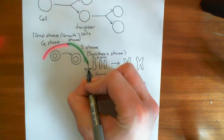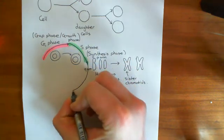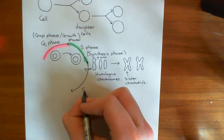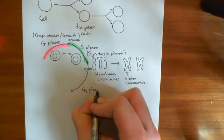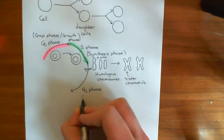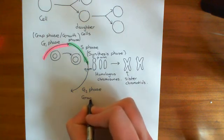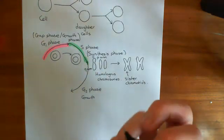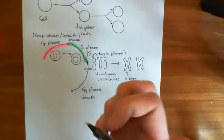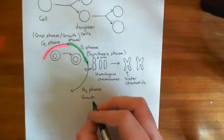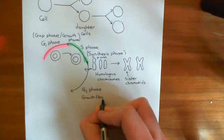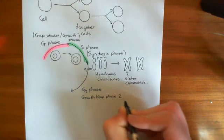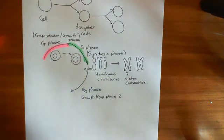The next phase in the cell cycle is the G2 phase, which stands for growth or gap phase 2. Again, this is a phase where the cell is getting bigger, making more organelles, and getting ready to divide.